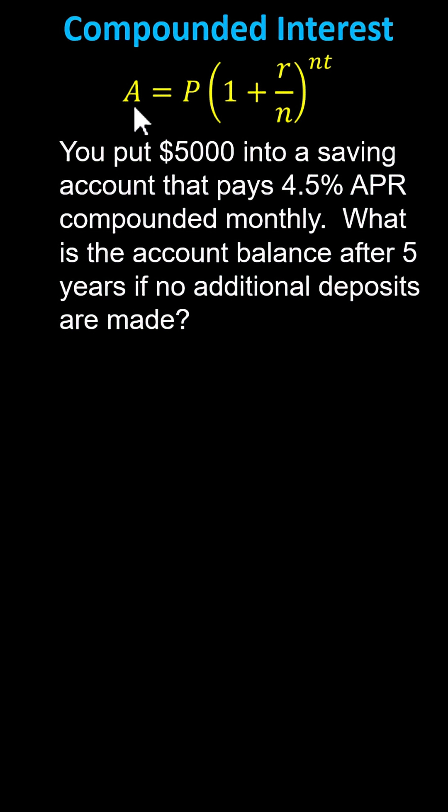where A is the amount after time T, P is the principal or starting amount, R is the annual rate of return, N, which appears twice in the formula, is the number of compounding periods per year, and T is the time in years.